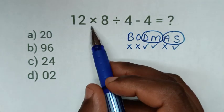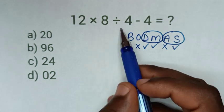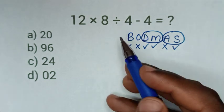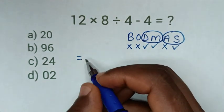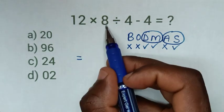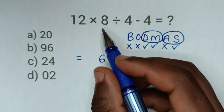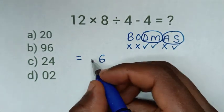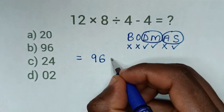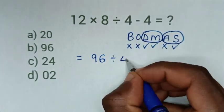In here it starts with multiplication then division, so it will be equal to, from 12 times 8. 8 times 2 is 16, goes 1. 8 times 1 is 8 plus 1 is 9. Then divide by this 4 minus 4.